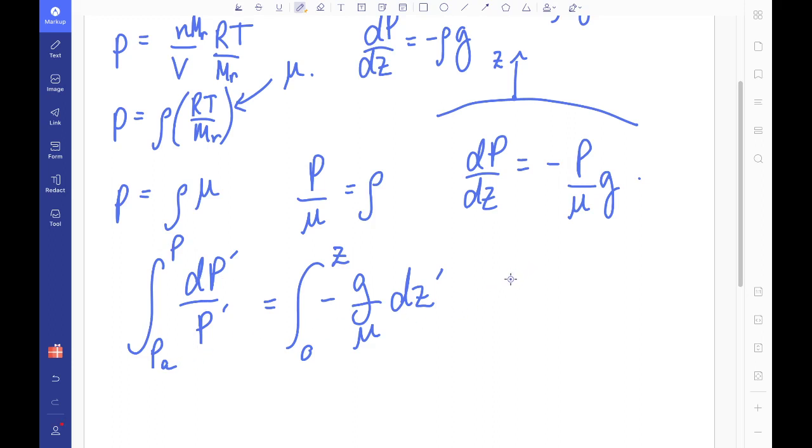So when I integrate this function on the left-hand side, I will get a natural log of the pressure over the atmospheric pressure. So it's going to be natural log of pressure minus natural log of the atmospheric pressure, just putting in these two bounds. And on the other side, it's going to be g over mu multiplied by z.